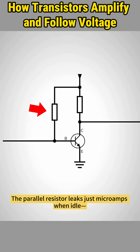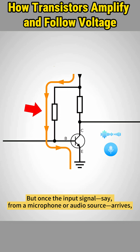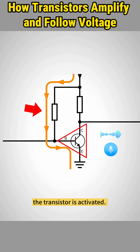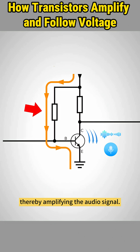The parallel resistor leaks just microamps when idle — just enough to keep the circuit ready, but not enough to fully turn it on. But once the input signal, say from a microphone or audio source, arrives, the transistor is activated. It allows more current to flow from collector to emitter, thereby amplifying the audio signal.